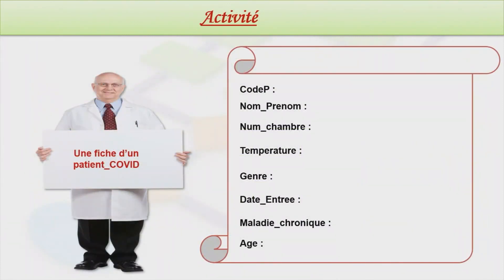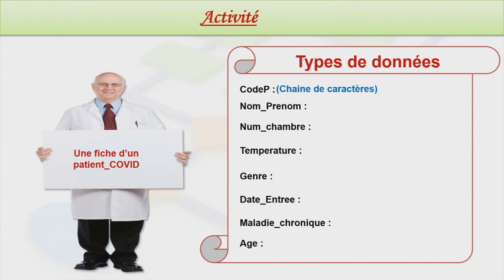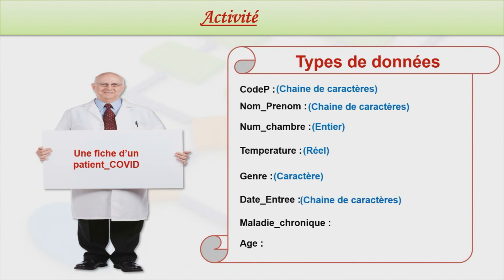Une fiche de patient COVID contient plusieurs données de types différents : code patient et nom/prénom sont de type chaîne de caractère, le numéro de chambre et l'âge de type entier, la température de type réel, le genre et la maladie chronique de type caractère, et la date d'entrée de type chaîne.